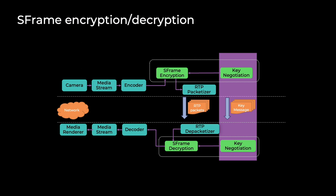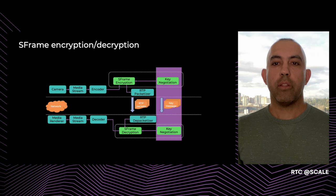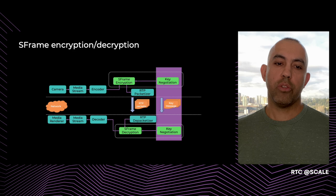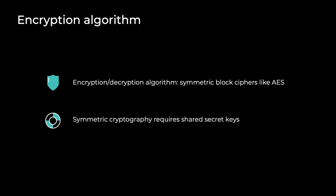WebRTC provides interfaces to inject S-Frame. On the sender side, S-Frame sits between the encoder and the packetizer, and encrypts the frames out of the encoder. On the receiver side, S-Frame sits between the depacketizer and the decoder, and decrypts the frames before sending them to the decoder. S-Frame encrypts and decrypts the media frame given an encryption key. This key needs to be negotiated between the sender and the receiver. The two main components introduced in this architecture are the S-Frame encryption and the key negotiation.